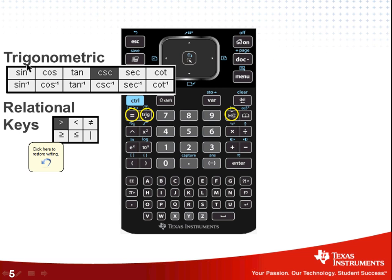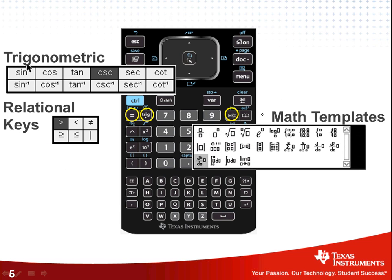Next we have the Math Templates button. Right now it looks like an absolute value, or perhaps a piecewise, as well as a lot of other things. This is one of the reasons why I started using the Nspire — because the math looks like it's supposed to. The square root goes over everything it's supposed to. An exponent is up where it's supposed to, according to what you write on your piece of paper and what you see in your textbook.